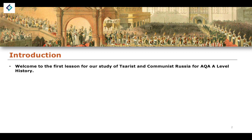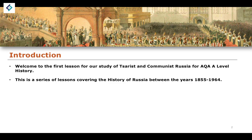It is the first lesson for our study of czarist and communist Russia, specifically focused on the AQA A-level history syllabus. We're covering Russian history from the years of 1855, which is the reign of Alexander II, all the way to 1964, which is the end of the reign — in inverted commas — of Nikita Khrushchev.